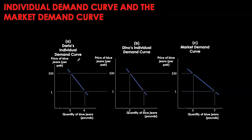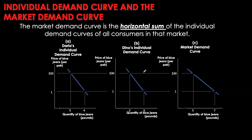Here we have two different consumers with downward sloping demand curves for blue jeans, given all other factors constant — ceteris paribus. The market demand curve will simply be the horizontal summation of the individual demand curves. A horizontal summation refers to holding price constant at some level — say $30 — and summing up quantities along the horizontal axis. The first individual wants to buy three pairs of jeans and the second individual wants to buy two pairs of jeans.